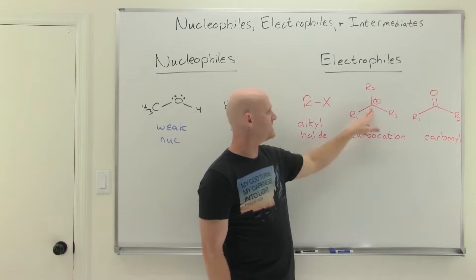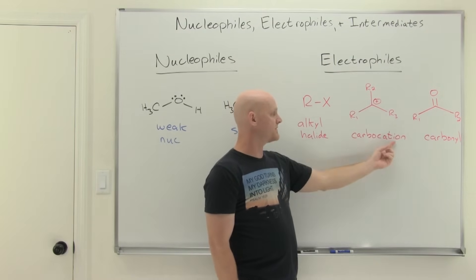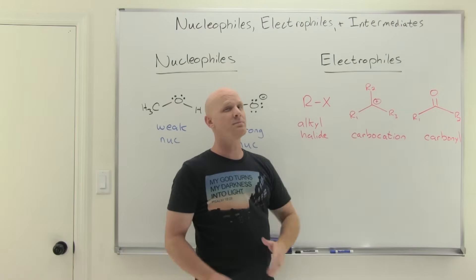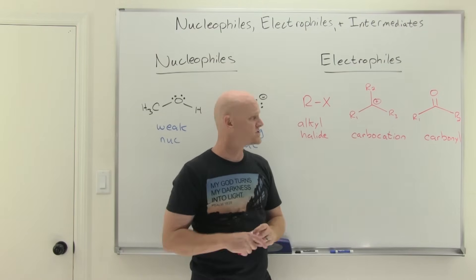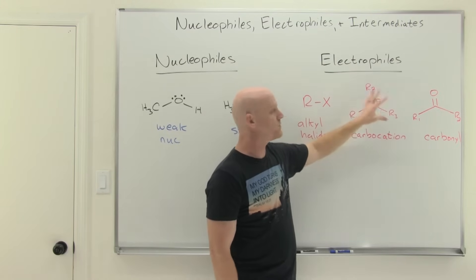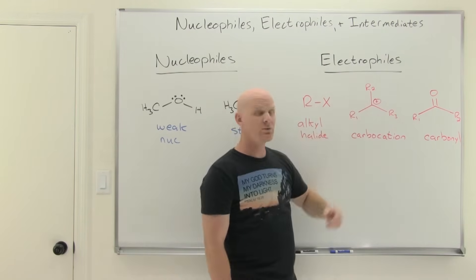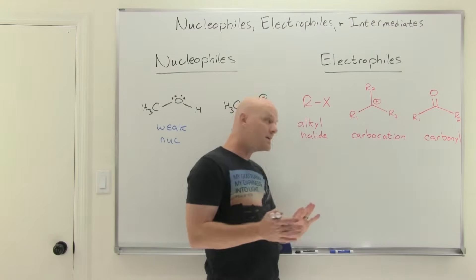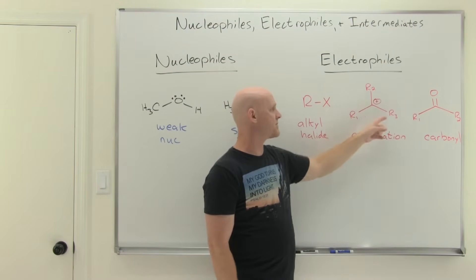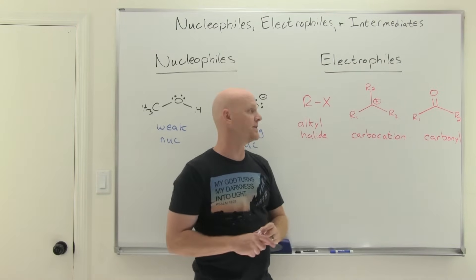The next electrophile is what we call a carbocation — a positive charge on a carbon atom. These are a major part of one of the reactions in the next chapter. A carbocation can be surrounded by R groups, and depending on how many of those are hydrogens versus carbons, we'll see trends in stability.